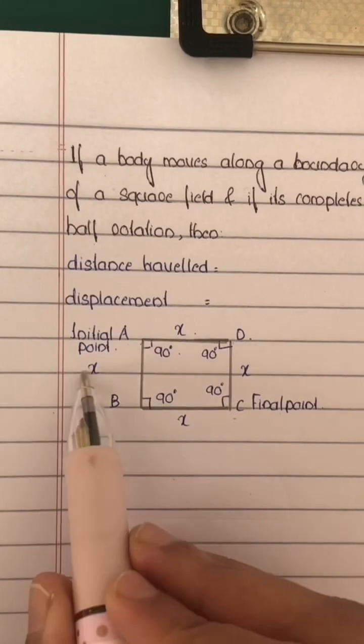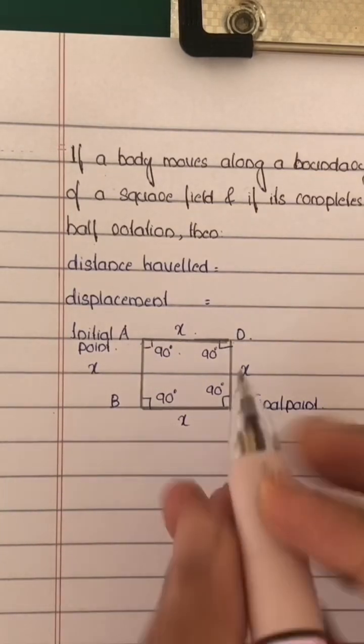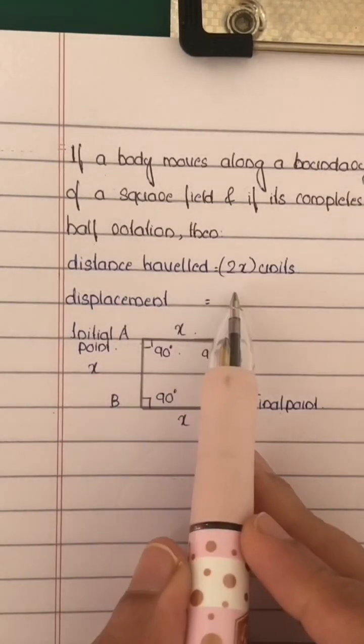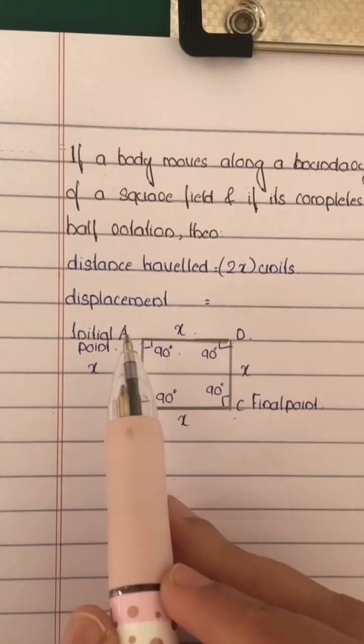That is x plus x equals 2x. So the distance traveled will be 2x units. Now, displacement will be the straight line distance between initial point and final point.